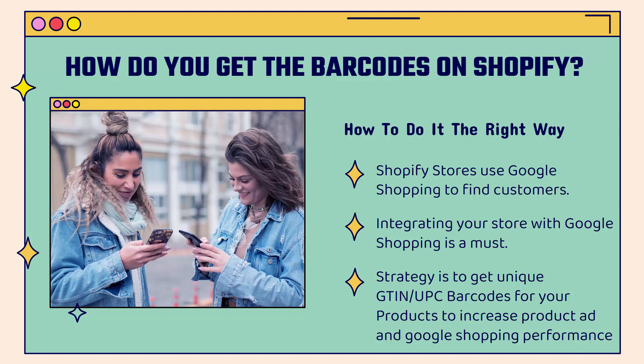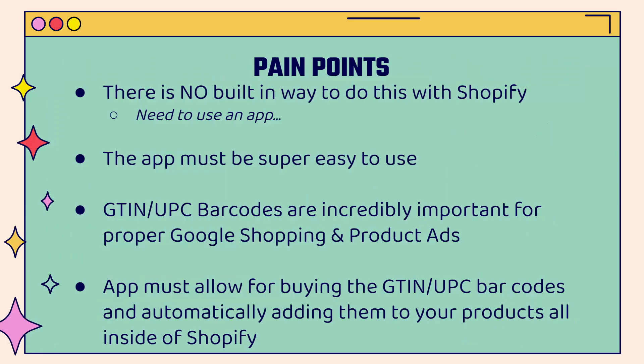When you're on Google and you see those shopping ads on a search result, your Shopify store could take full advantage of that and find a lot of great customers. The strategy here is to get unique GTIN, UPC, even EAN barcodes for your products to increase product and Google Shopping performance. Your ads and your Google Shopping placements are going to work better because this is something that Google wants to see.